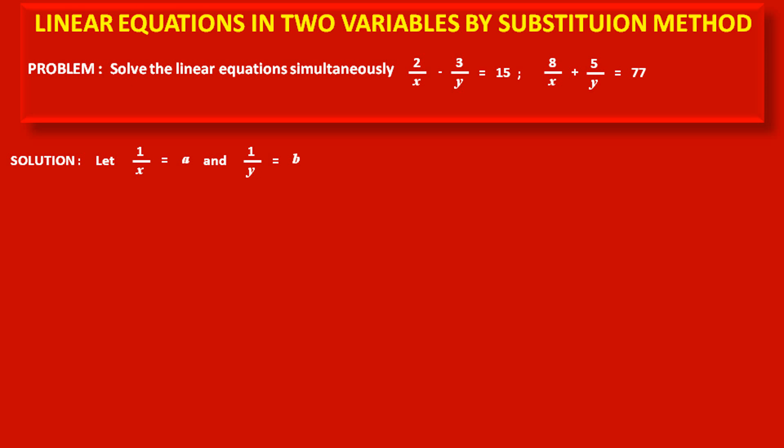we get the first equation as 2a - 3b = 15. This is now a linear equation. This is equation (1).